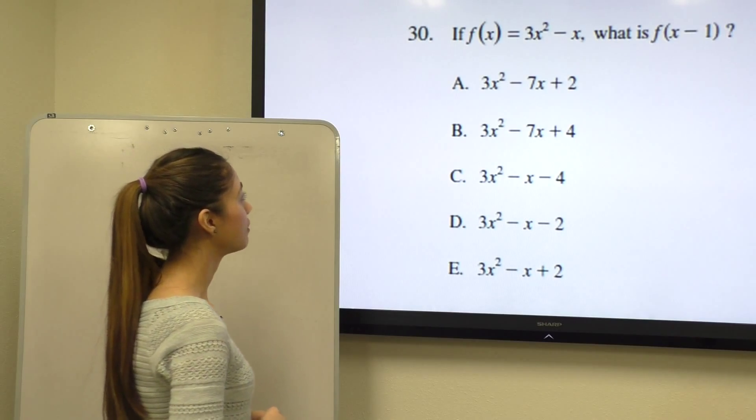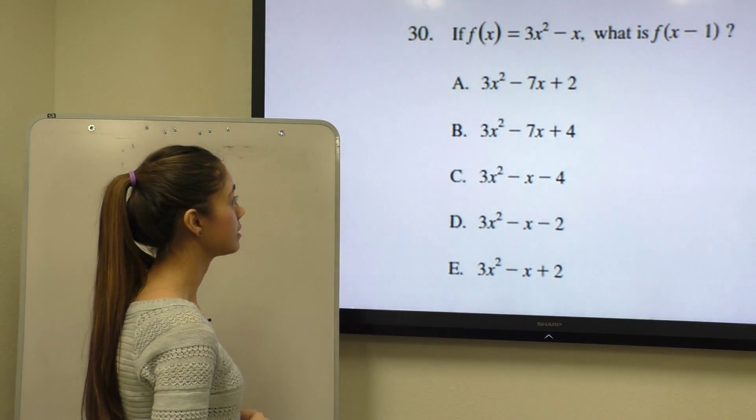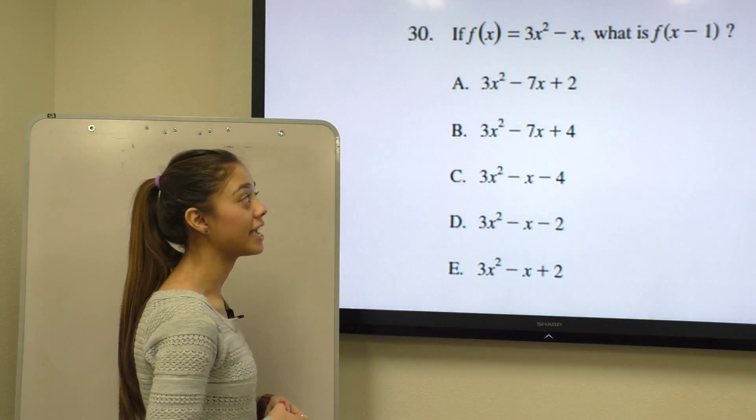For question number 30 it says, if f of x equals 3x squared minus x, what is f of x minus 1?